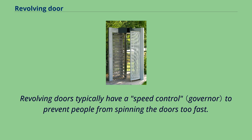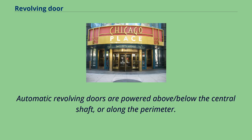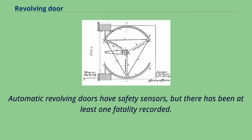Revolving doors typically have a speed control to prevent people from spinning the doors too fast. Automatic revolving doors are powered above or below the central shaft, or along the perimeter. Automatic revolving doors have safety sensors, but there has been at least one fatality recorded.